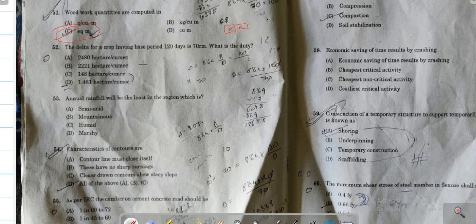Next, the delta for crop having base period B value is 120, and delta is given as 70 centimeters. The formula is duty: D equals 8.64 times B divided by delta. B value is 120 and delta value is 0.70.